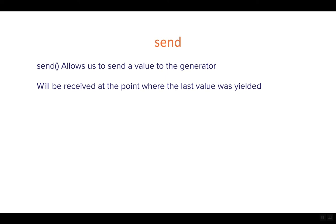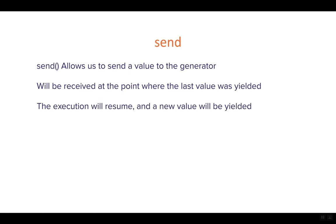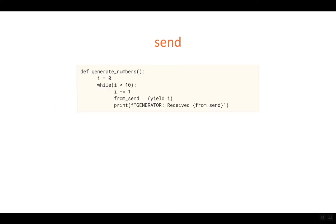The new value that is sent to the generator will be received at the point where the last value was yielded. The generator pauses when it yields a value, and at that pause point we can potentially receive a value transmitted with the send method. Receiving a value via send is also the signal for the generator to continue on until the next yield.